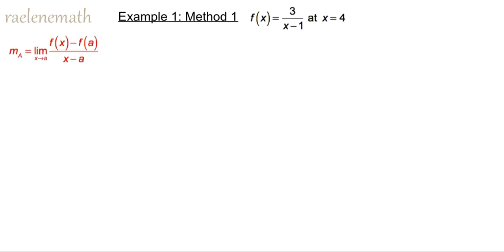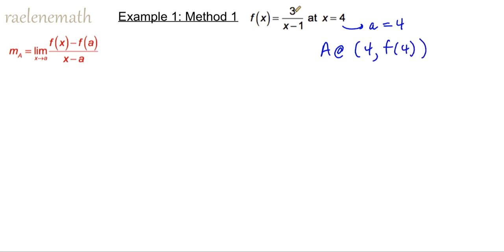We set up our limit of the secant slope as the x-coordinate called x approaches a. In this case, the given x-coordinate x equal to 4 is the a value. So we're going to set up our two points. The first point, the point of tangency a, is located at 4, f of 4. If we substitute 4 in for x, we get that this point is located at 4, 1. And the second point, the point that is going to move towards the first point, is going to be located at x, f of x.